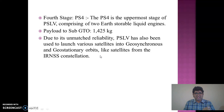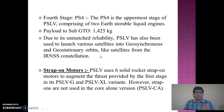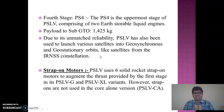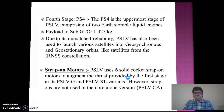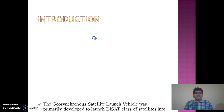Due to its unmatched reliability, PSLV has also been used to launch various satellites into geosynchronous and geostationary orbits, like satellites from the IRNSS constellation. PSLV uses six solid rocket strap-on motors to augment thrust in its PSLV-G and PSLV-XL variants. However, strap-ons are not used in the core-alone version, that is PSLV-CA. These are the different types of PSLV: PSLV-G, PSLV-XL, and PSLV-CA.